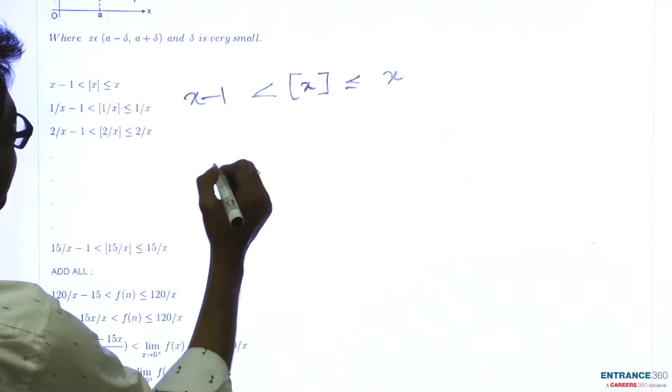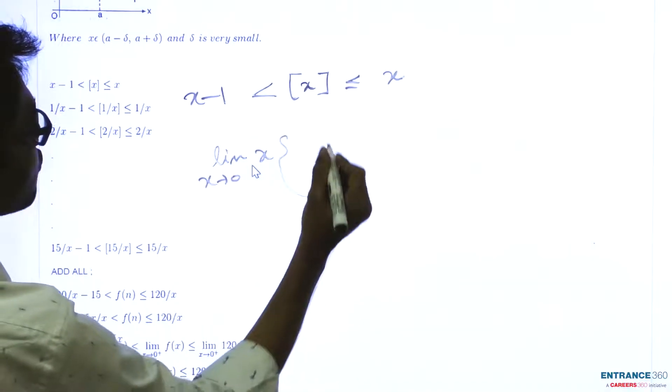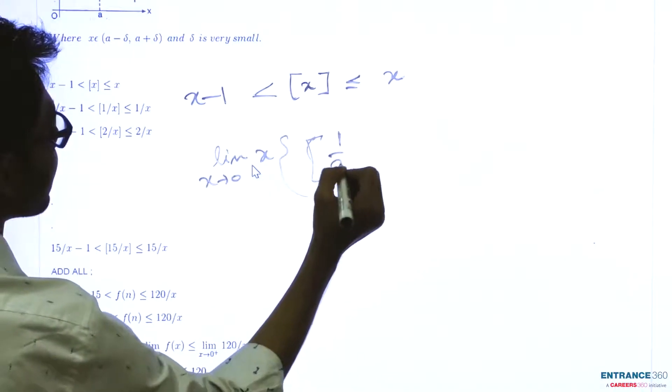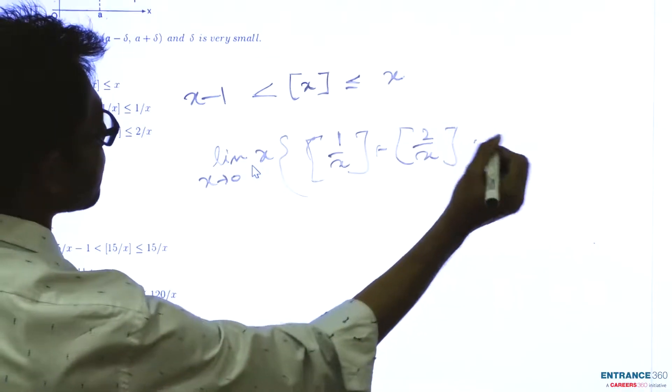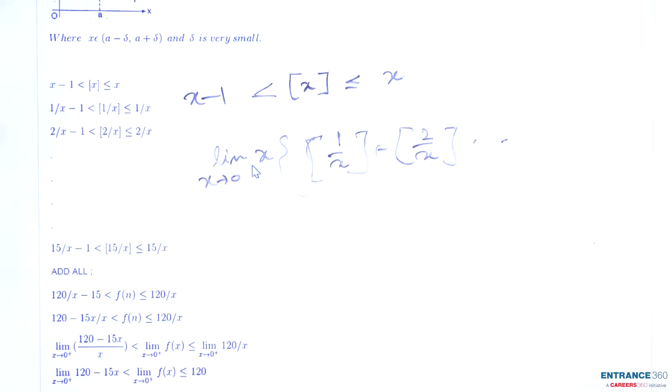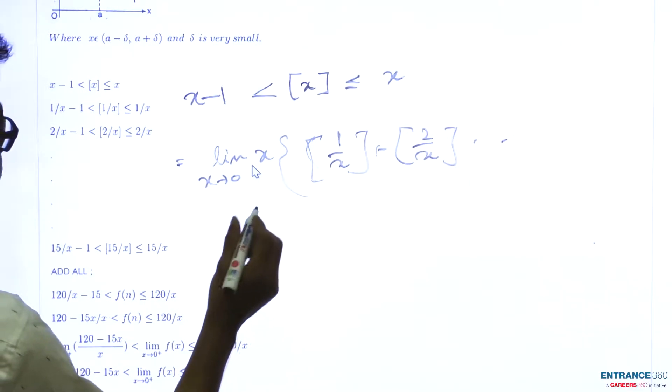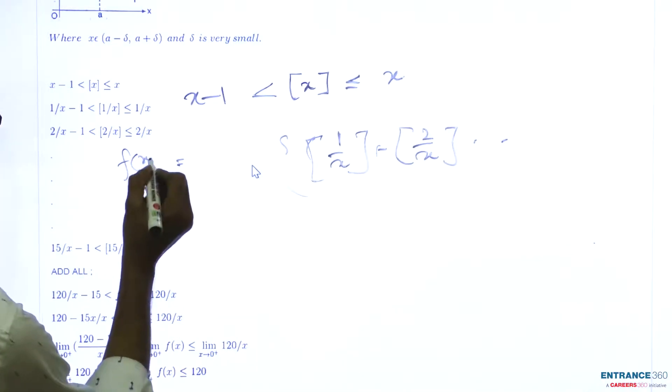Since we need to find limit x tends to 0 of x times the sum of greatest integer functions of 1/x, 2/x up to 15/x, let us denote this expression with f(x).